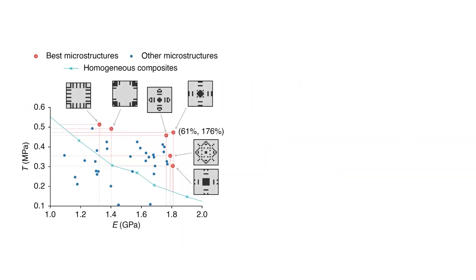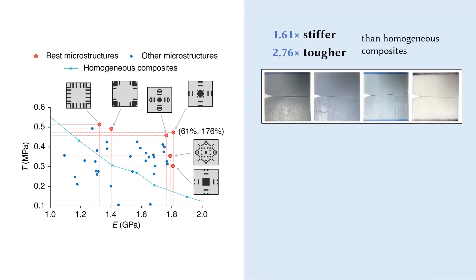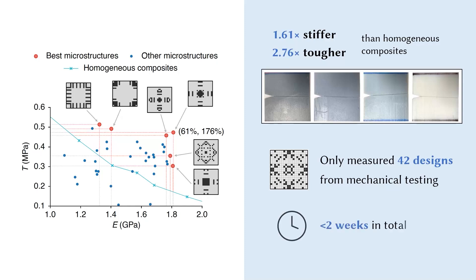We demonstrate the effectiveness of our method by comparing microstructure designs on the Pareto front with homogeneous 3D-printed composites. The microstructures discovered using our pipeline are up to 1.6 times stiffer and 2.8 times tougher than their homogeneous counterparts. The execution process only measured 42 microstructures from mechanical testing over the course of less than two weeks.